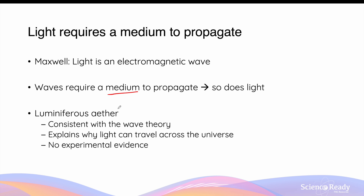In the 19th century, scientists proposed there must be a medium present throughout the universe allowing light to propagate through space. They called this medium the luminiferous ether. This model was created such that light's propagation is consistent with wave theory and explains why light can travel across long distances without the presence of any known substance in space.